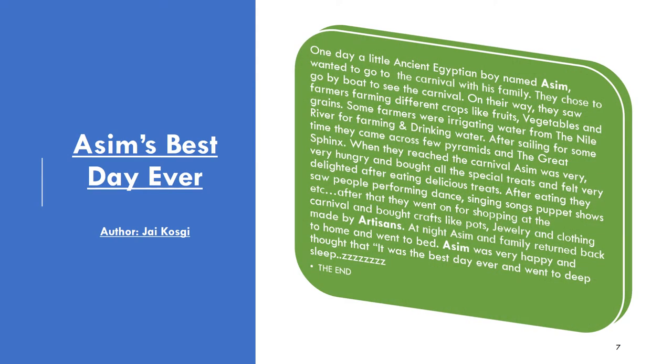This is my Ancient Egyptian Story, Asim's Best Day Ever. One day a little Ancient Egyptian boy named Asim wanted to go to the carnival with his family. They chose to go by boat to see the carnival. On their way they saw farmers for different crops like fruits, vegetables and grains. Some farmers were irrigating water from the Nile River, farming and drinking water.